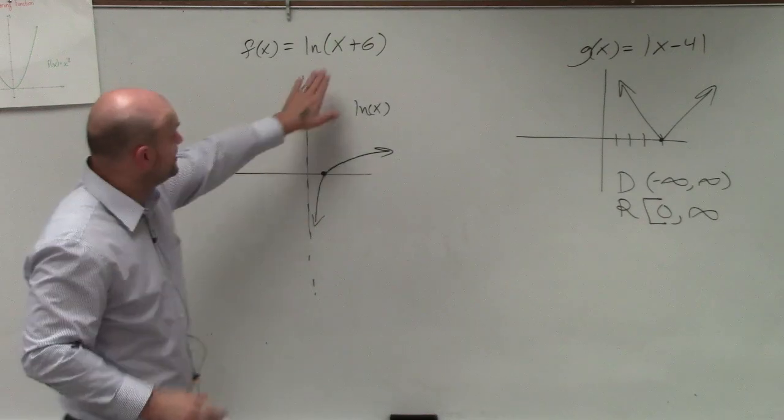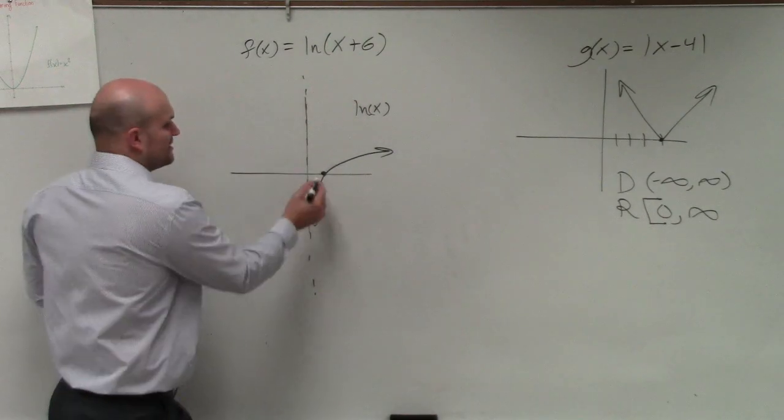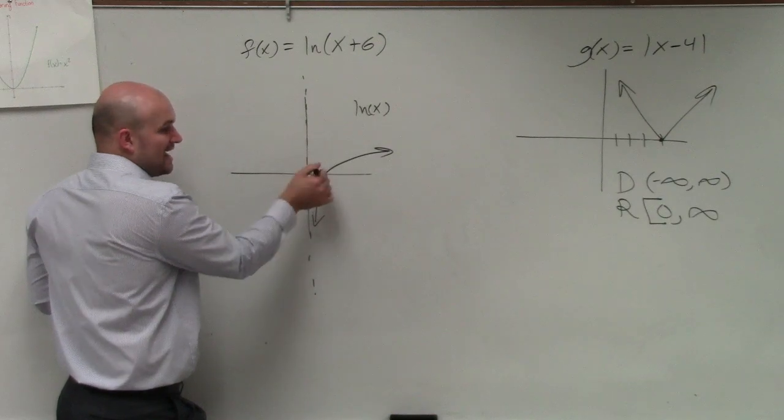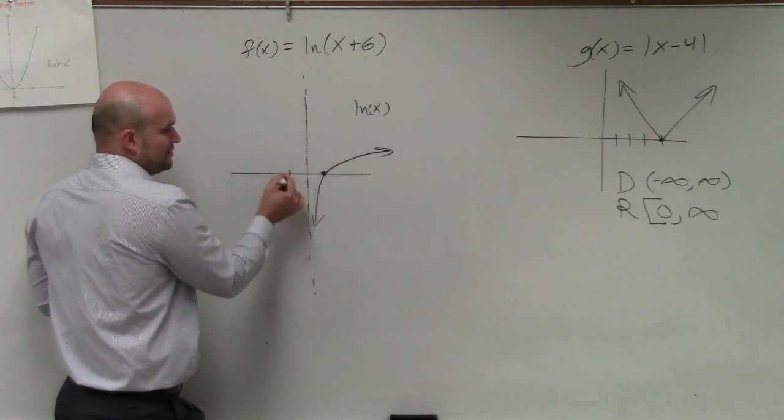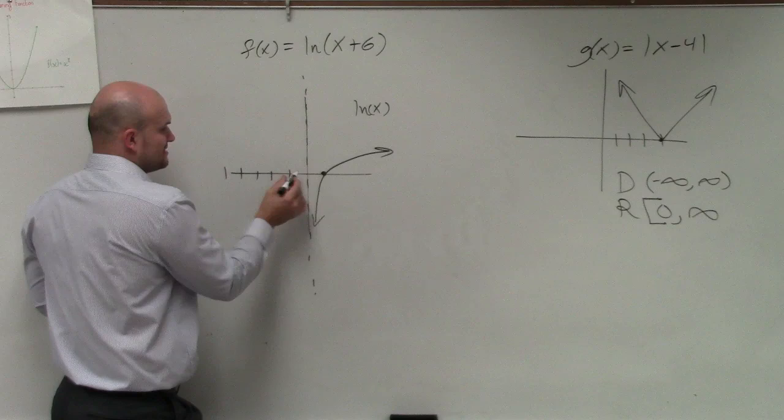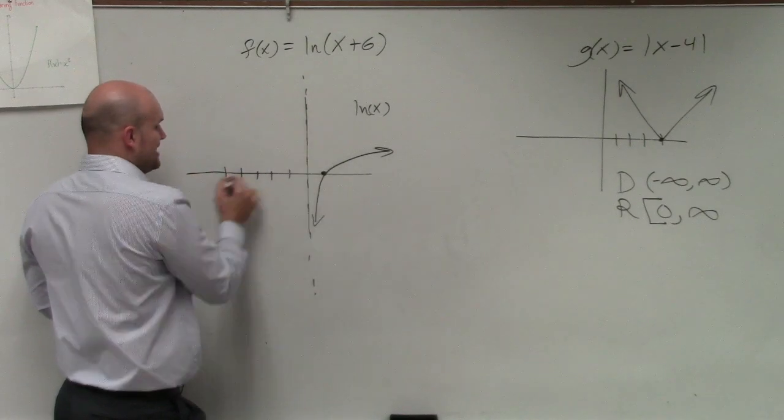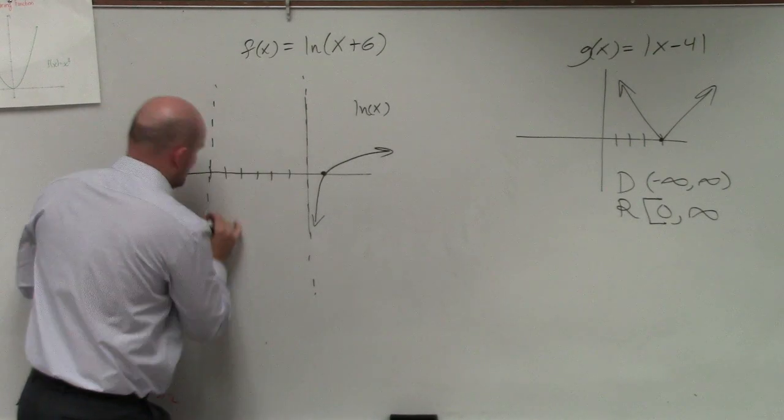That's really important because if I'm shifting this graph six units to the left, not only am I shifting my x-intercept 1, 2, 3, 4, 5, 6, I'm also shifting my asymptote six units to the left.